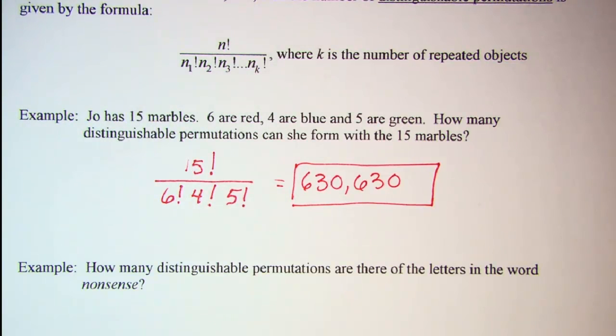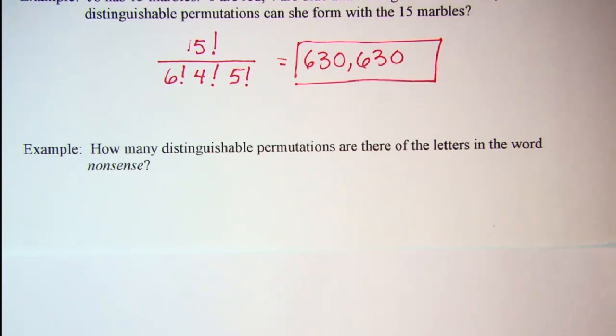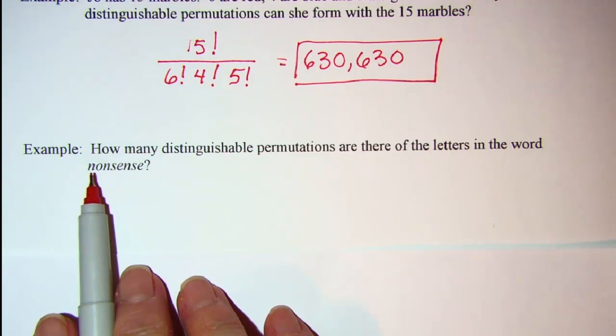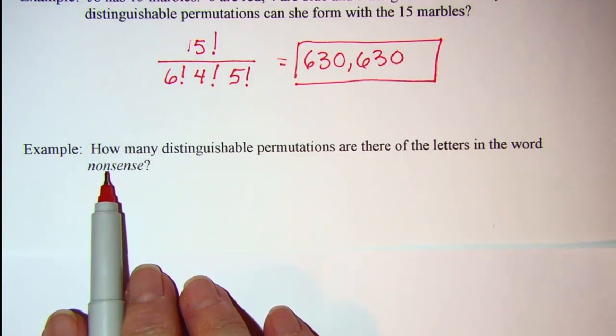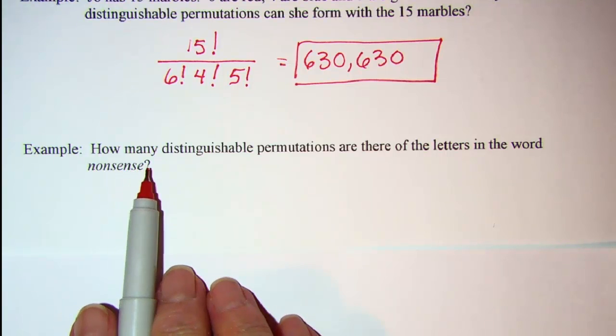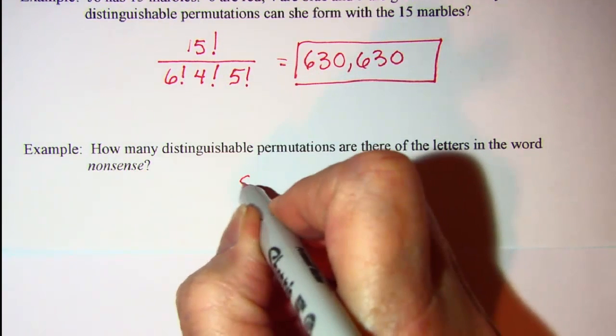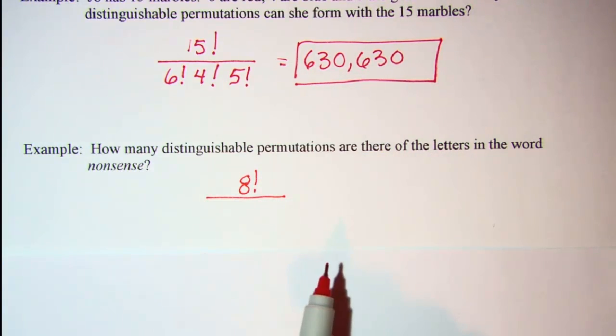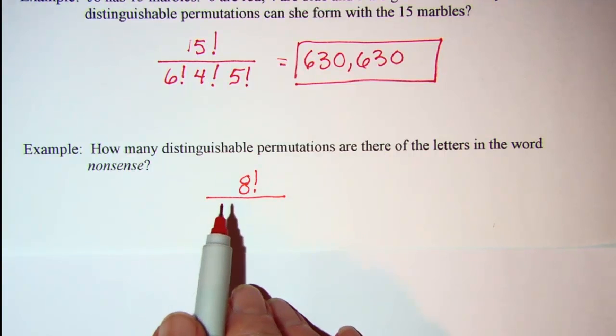Next example. How many distinguishable permutations are there of the letters in the word nonsense? So we need our total number of letters: 1, 2, 3, 4, 5, 6, 7, 8 letters, and that will be in our numerator, 8 factorial, and then we're going to divide by the repetitions.